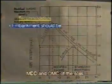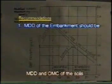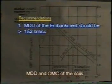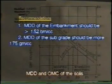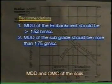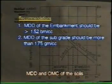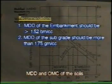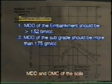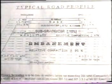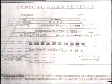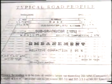Determining recommendations: MDD of embankment soil should be greater than or equal to 1.52 grams per cc up to 3 meters height, and greater than or equal to 1.6 grams per cc for more than 3 meters height. MDD of subgrade soil should be greater than or equal to 1.7 grams per cc. The relative dry density requirements in pavement construction are shown in the figure.